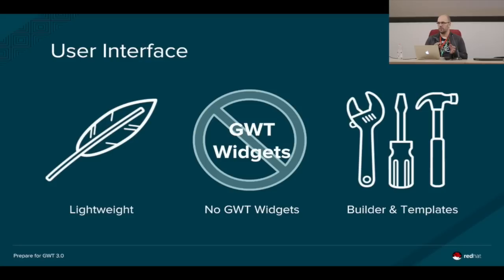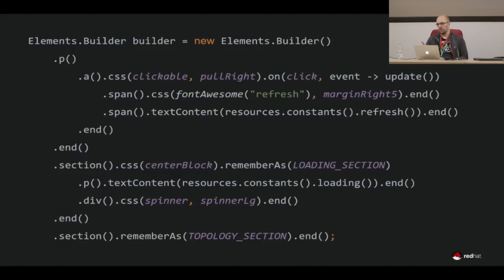When I compare the DOM tree of the current management console — which is quite deep and nested — to the one we have now with HAL Next, that's a real difference, and it pays out in terms of performance. We came up with something we call builders and templates — a small API for building DOM trees on the fly. It has convenience methods to apply CSS styles and attach event handlers. This works very well for us and in the end just produces pure Elemental elements.